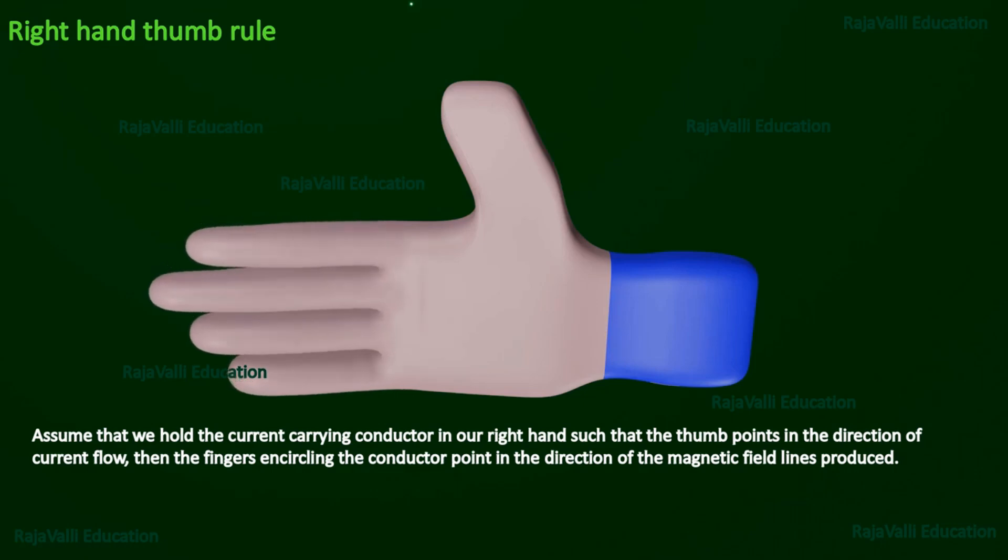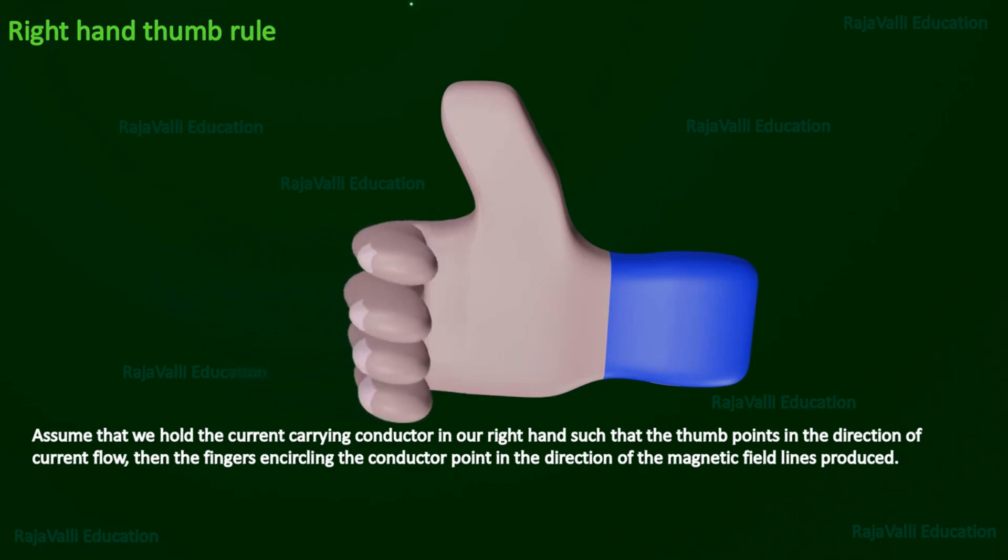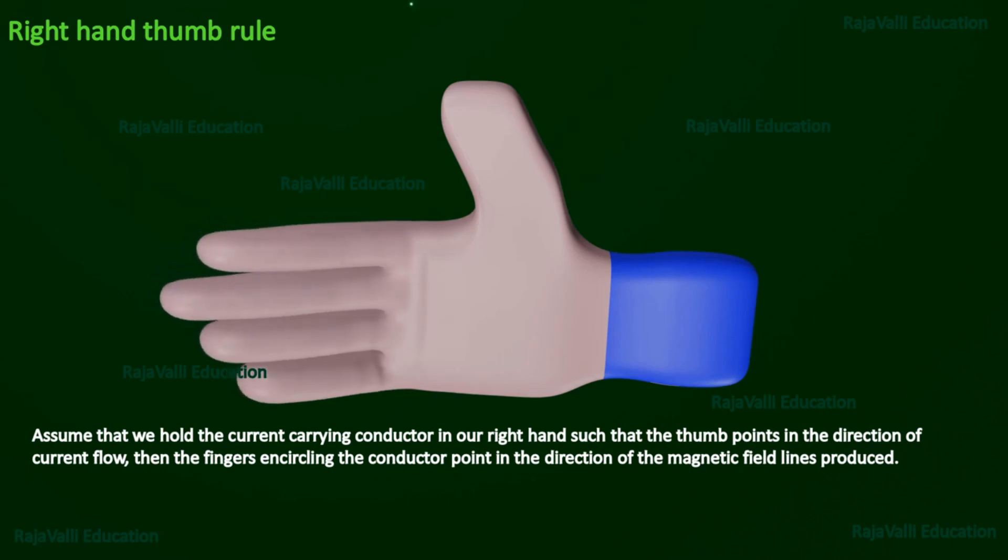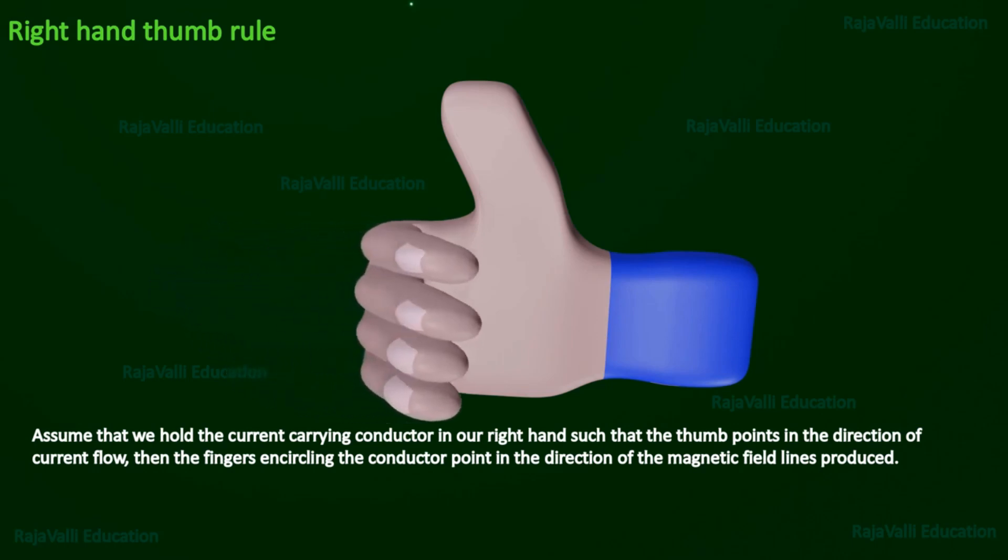First, we see the rule. Let's assume that we hold the current carrying conductor in our right hand such that the thumb points in the direction of the current flow, then the fingers encircling the conductor point in the direction of the magnetic field lines produced.